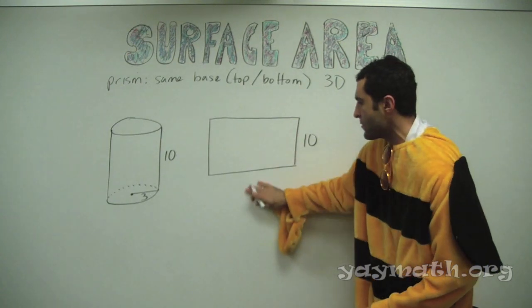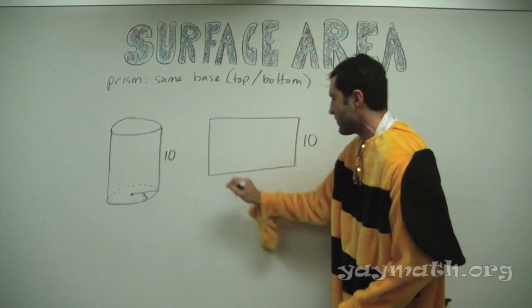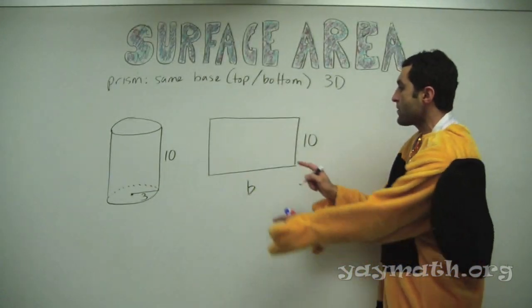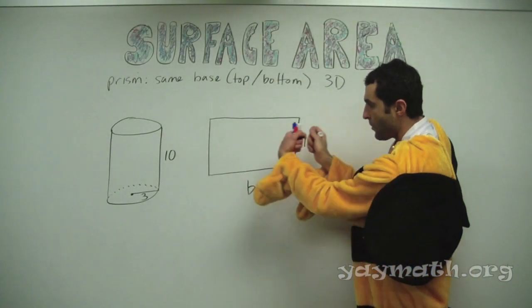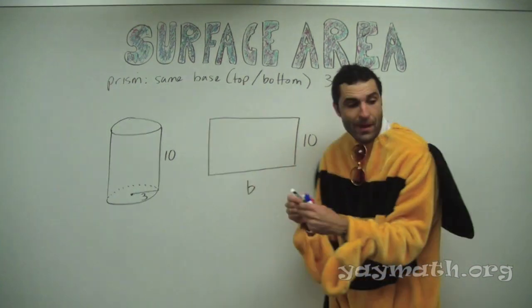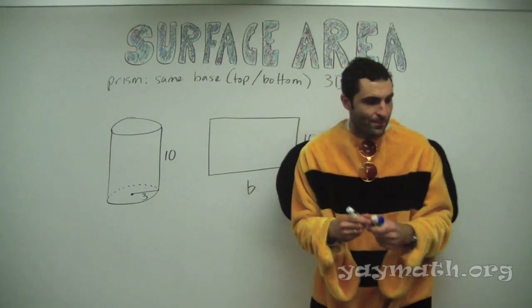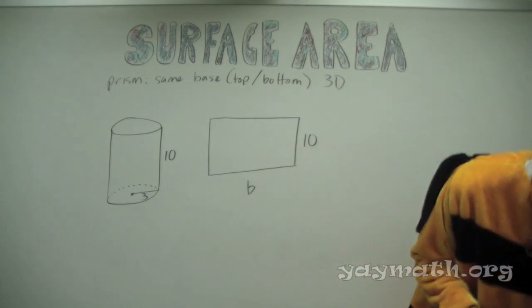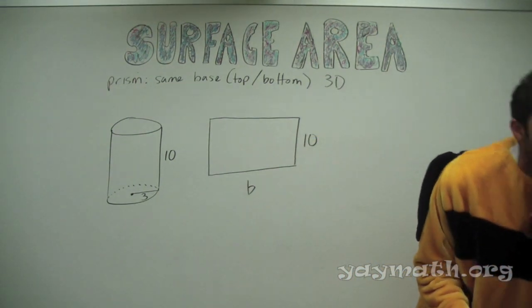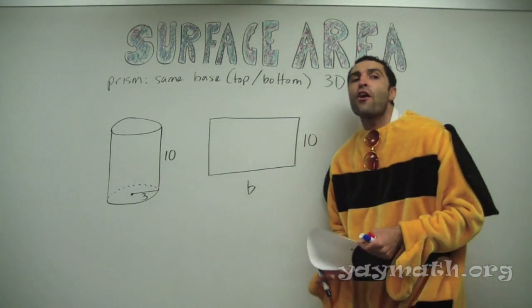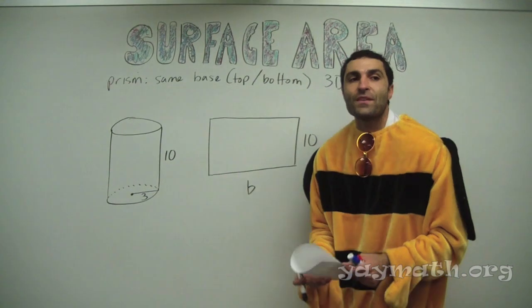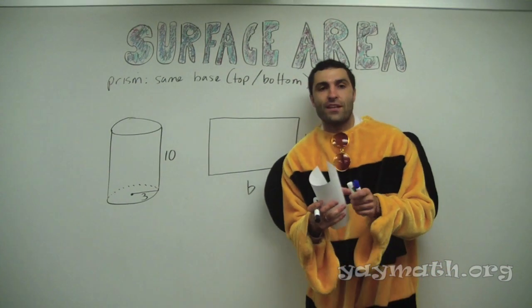Why don't we do base times height? So we have the ten — you unravel. Now this. Go back to the paper. Three? That's a good guess. It involves three.